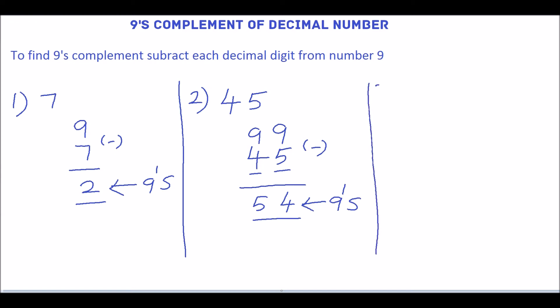We will see one more example. 743. So, write the number 743. Subtract the digits 3, 4, 7 from 9. So, write 9. We have to subtract this. 9 minus 3 is 6. 9 minus 4 is 5. 9 minus 7 is 2. 256 is the 9's complement for the decimal number 743.